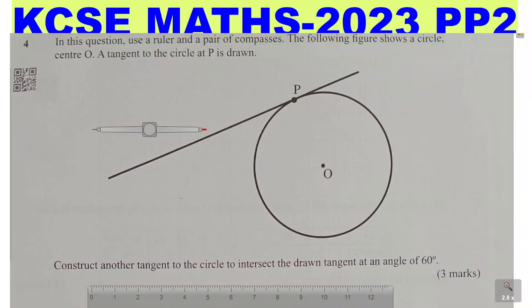Question 4. In this question, use a ruler and a pair of compasses. The following figure shows a circle, center O. A tangent to the circle at P is drawn. Construct another tangent to the circle to intersect the drawn tangent at an angle of 60 degrees.